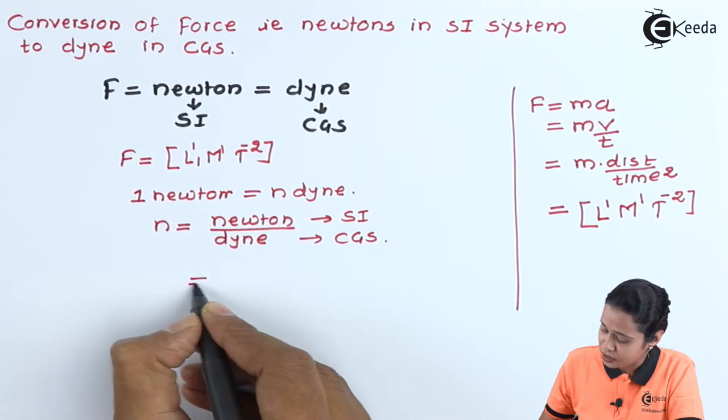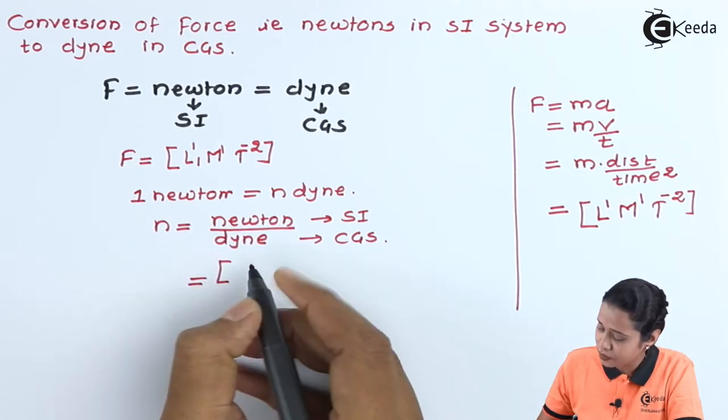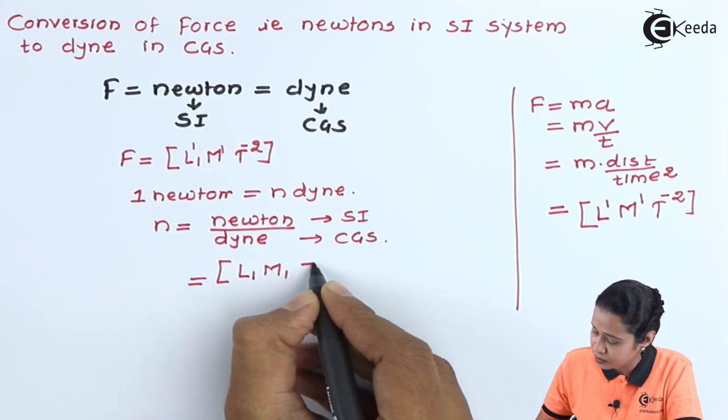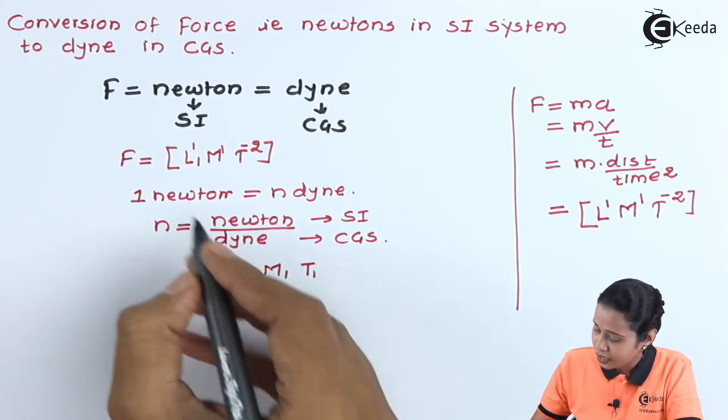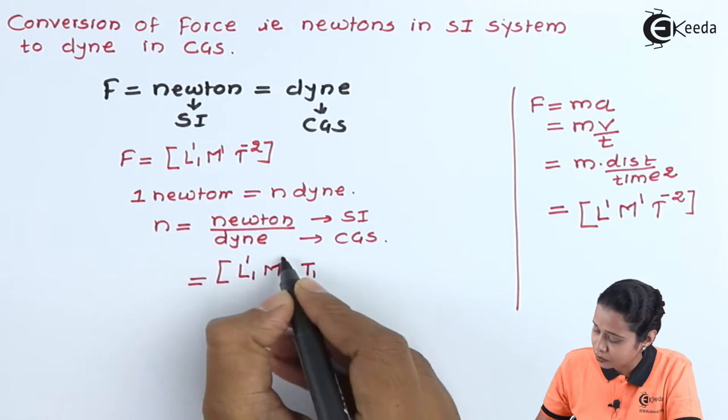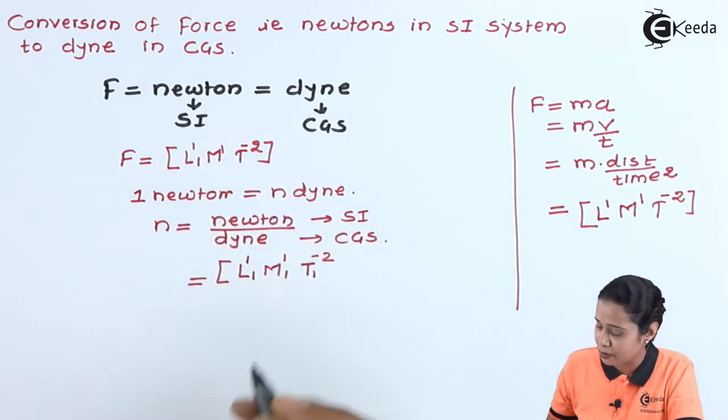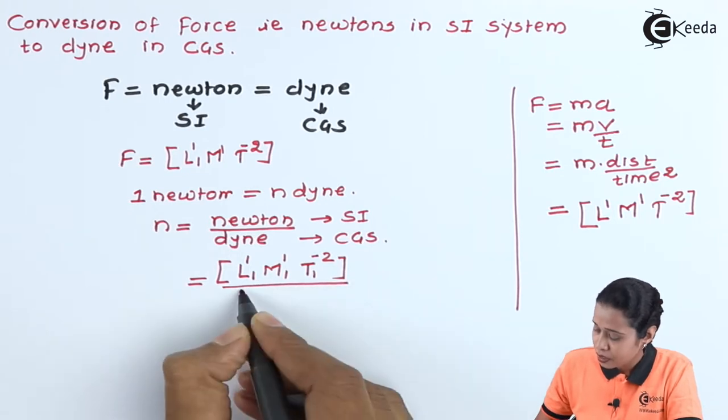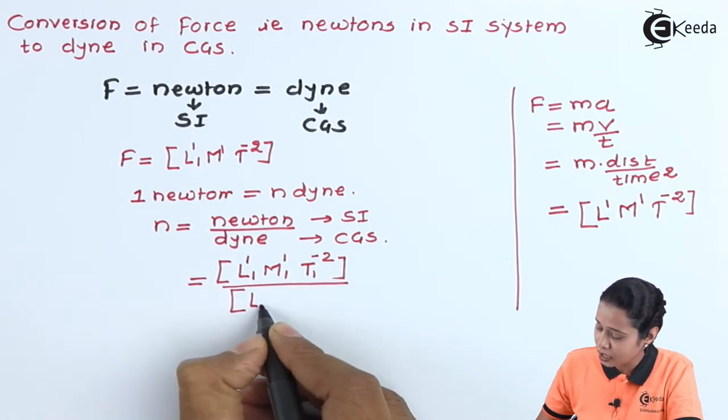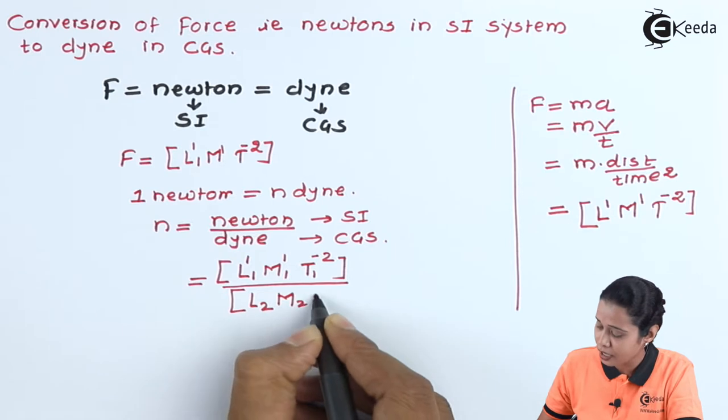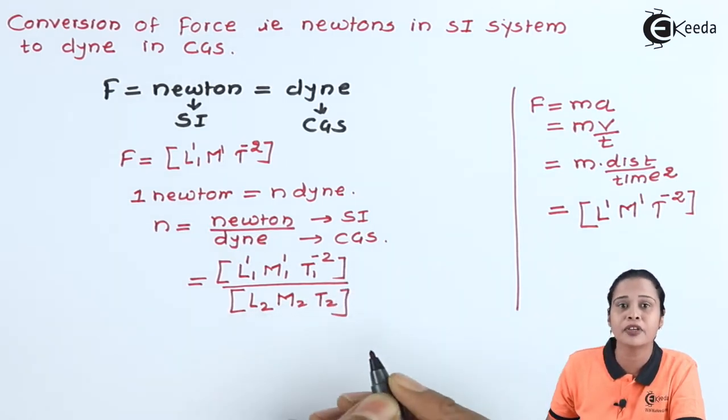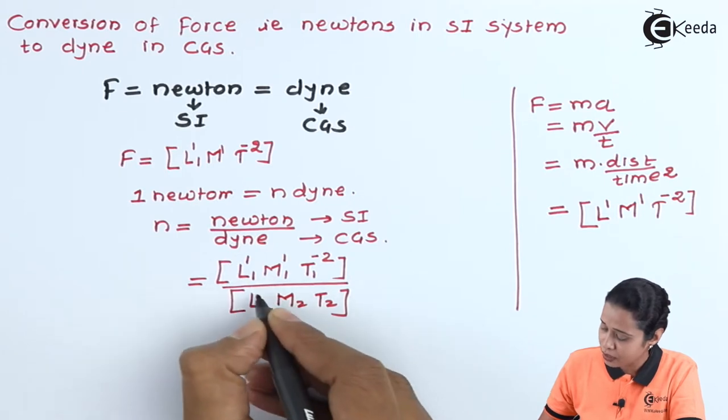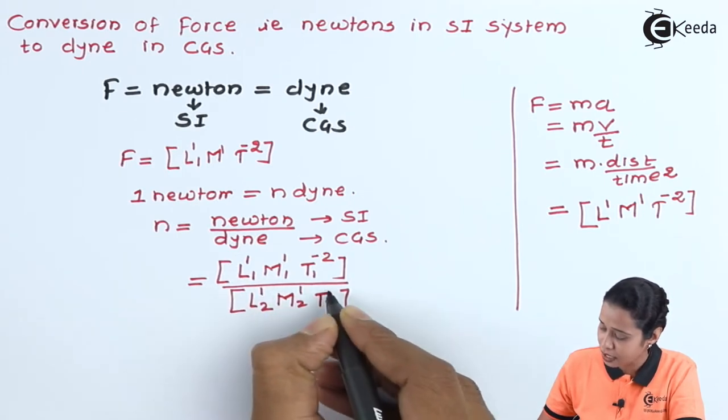Now let us write down dimensions. In SI unit we will write down L1, M1, T1 and its power will be 1, 1, minus 2 from this dimensional. In CGS system we will write down L2, M2 and T2. Again, we have the same physical quantity, so its power will be same. So power will be again 1, 1 and minus 2.